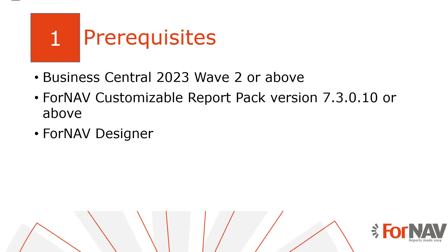Today I will be working in a Business Central on-premise server with the Business Central 2024 Wave 1 release. I have installed the Fornav customizable report pack and executed a step-by-step wizard from the assisted setup to get started. Some of the Fornav features I will demonstrate today will only be available in Business Central 2023 Wave 2 or above, and Fornav version 7.3.0.10 or above. The way report layouts work is similar on older versions. I have installed and set up the Fornav Designer, which you can download from the Fornav website. Everything I do today will also work in a cloud environment.